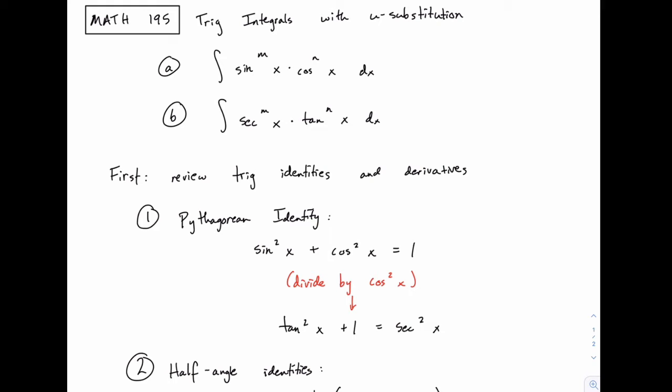In the first type of problem where we have powers of sine and cosine — something like sine squared of x times cosine cubed of x — we'll pick a substitution where u equals sine of x or cosine of x. In the other case with powers of secant and tangent, u might equal secant of x or tangent of x. By paying attention to those powers early on, we can select the right u that will make the process as smooth as possible.